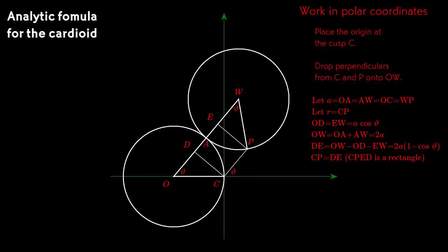And CPDE is a rectangle. So CP, the distance from the cusp to the point on the cardioid, is also 2A times the quantity 1 minus cos theta. And that's the formula we're after. That's how we represent a cardioid in polar coordinates.